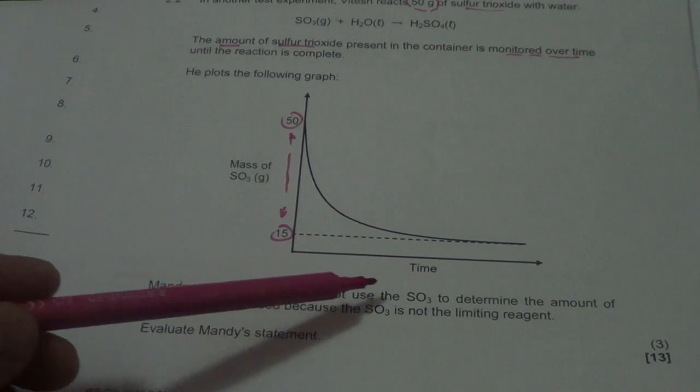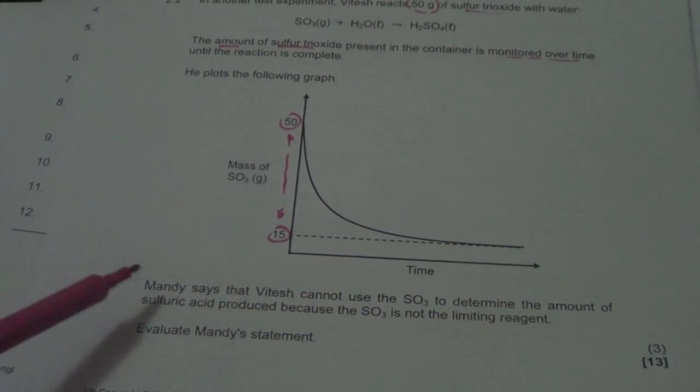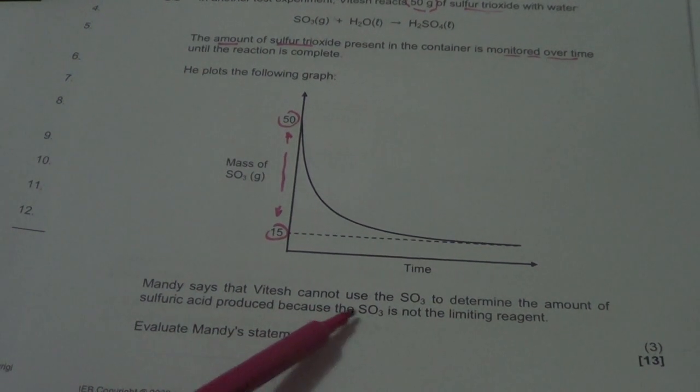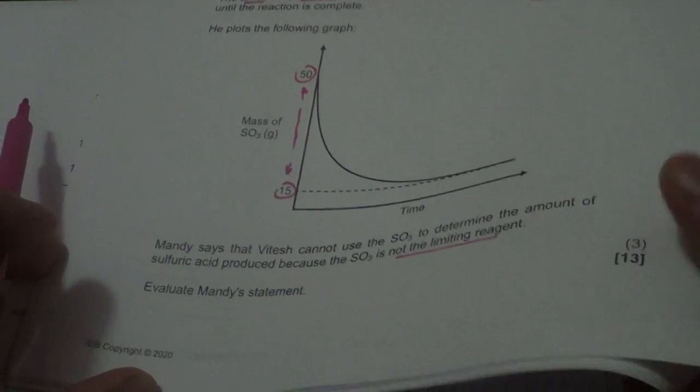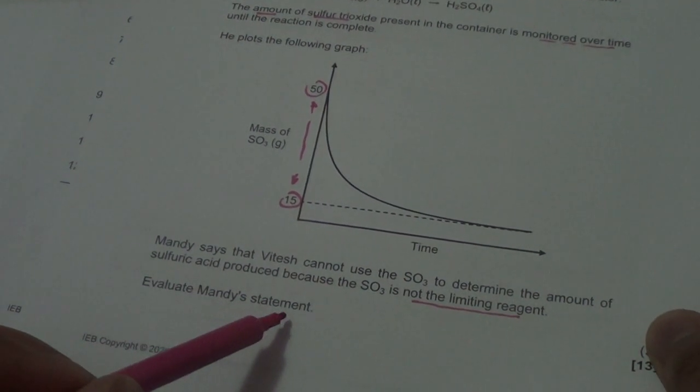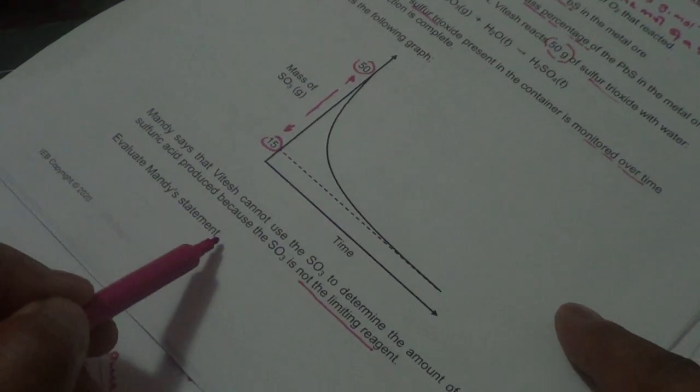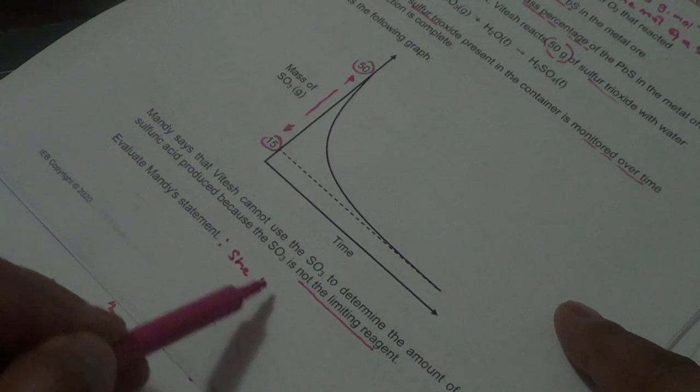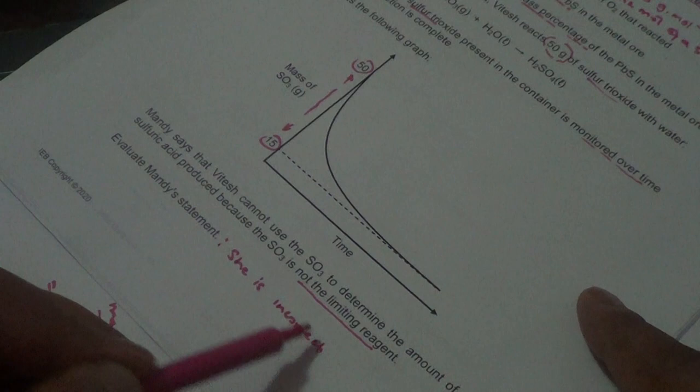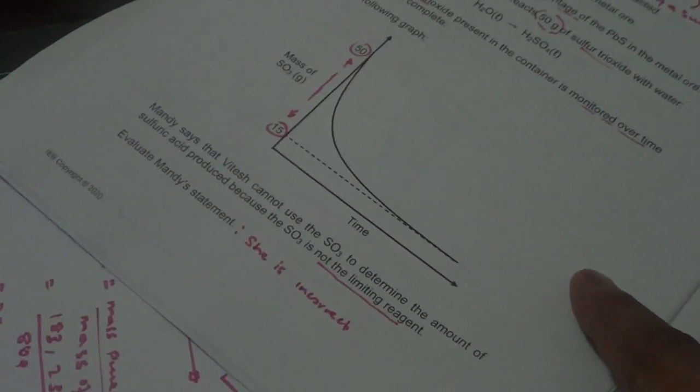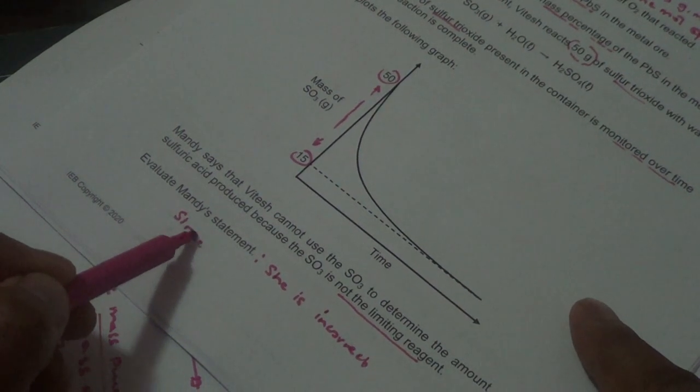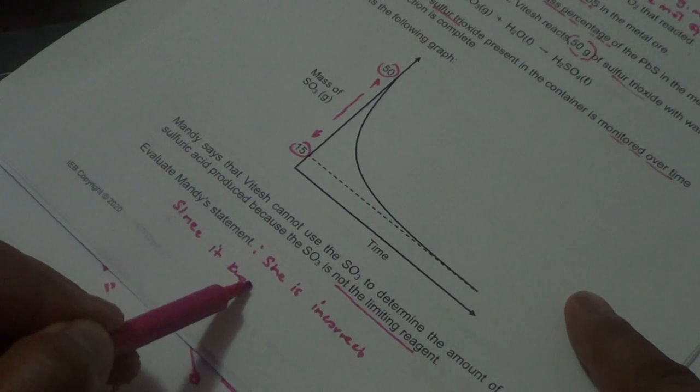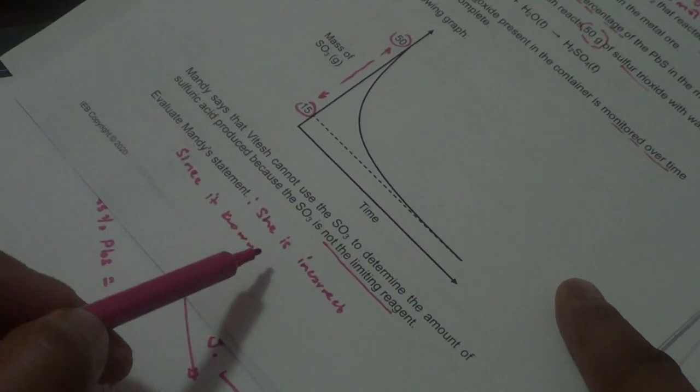We know what we used here is going to be the difference between the two, which is what is going to help us calculate the reaction rate if we have to. Now it says Mendy says that Vitesh cannot use sulfur trioxide to determine the amount of sulfuric acid produced because the SO3 is not the rate limiting agent. She's right about that because it remains so it's in excess. But I don't think that could be true if we know what we know.